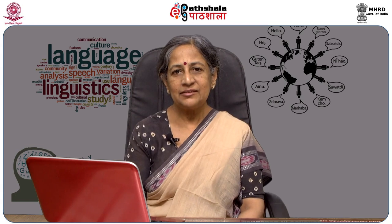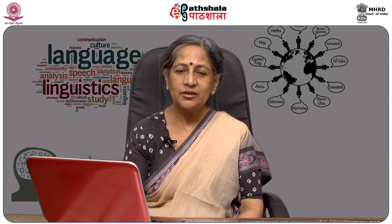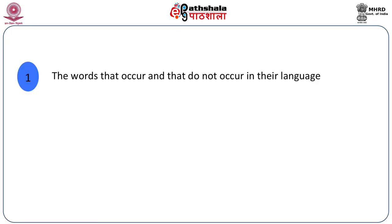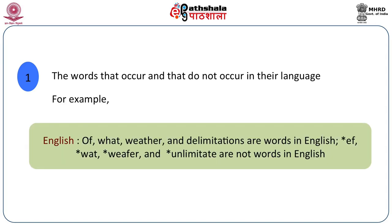First, speakers seem to know which words actually occur in their language and which words do not, although the words which do not occur can very well occur — they don't go against any rules of the language, whether of the sounds or the way sounds are put together. For example, if you speak English, you know that 'of', 'what', 'weather', and 'limitations' are all words of English. Compare 'ef' (E-F) — there's nothing wrong with that word, except it doesn't actually occur in English. Or the word 'wat' (W-A-T) — it's not an occurring word in English.